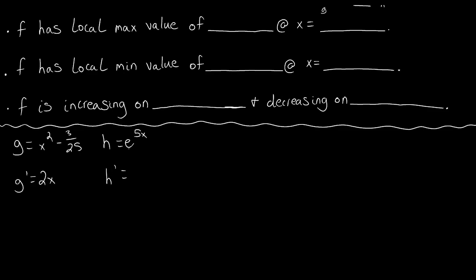How do we take the derivative of e to the 5x? We see that this function, e to the something, has a function inside of its exponent. So in order to take the derivative of that, we use the chain rule. The derivative of e to the something is e to that same something, and then we multiply by the derivative of that power. The derivative of 5x is 5, so h prime equals 5e to the 5x.